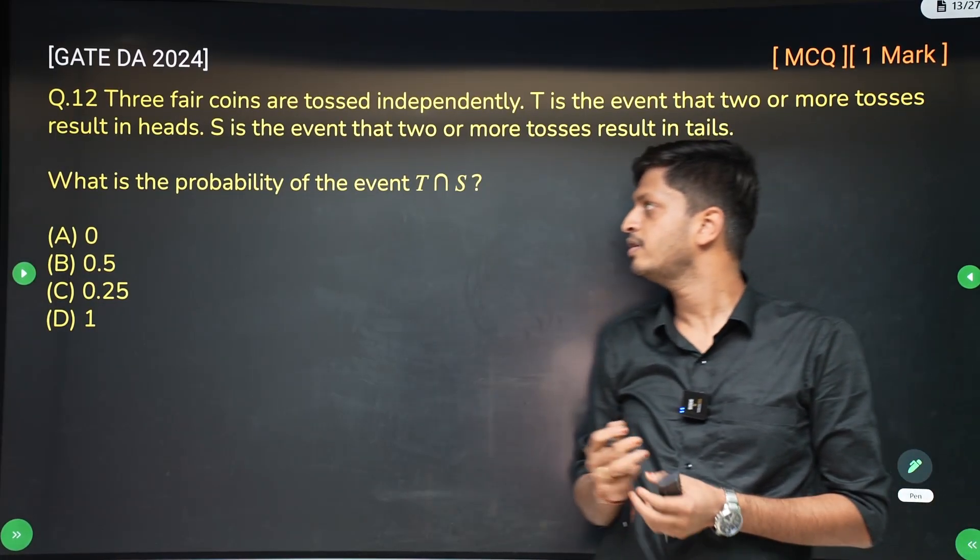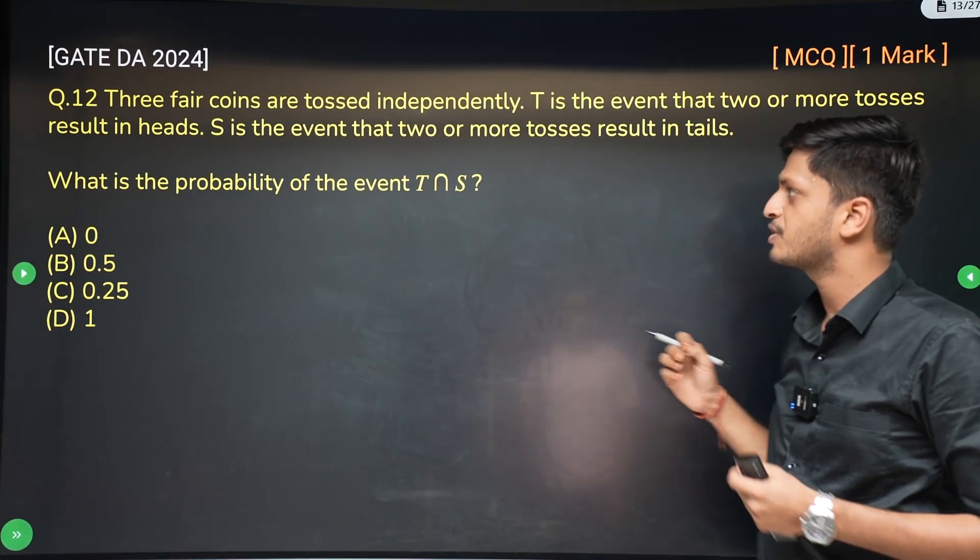Hi, this is question number 12 from GATE DA 2024. This is a one mark MCQ question and this question is from probability.